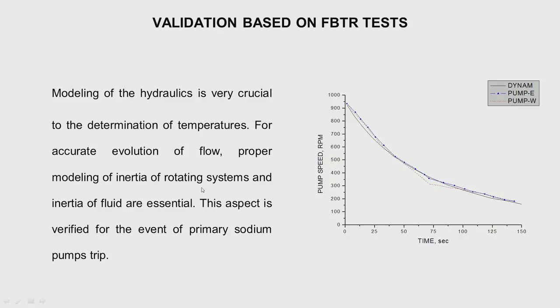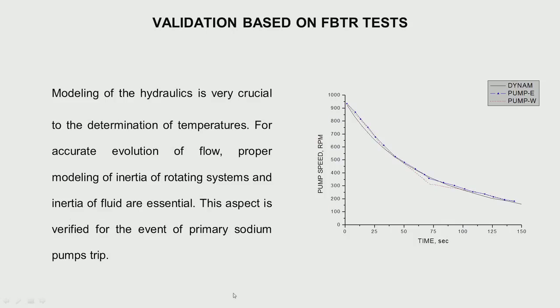When we started commissioning the FBTR reactor, we started comparing results with what we had from France, and then with data from FBTR itself. Looking at pump speed versus time — E means east loop, W means west loop, and DYNAM is our code — the predictions and actual findings are quite close. This means there is proper modeling of the inertia of the rotating systems and the inertia of the fluid. This again gave us confidence that our modeling is good — at every level when we develop confidence, we know we are close to reality.